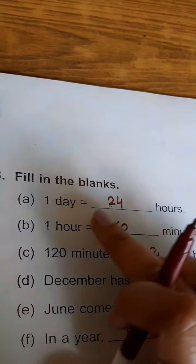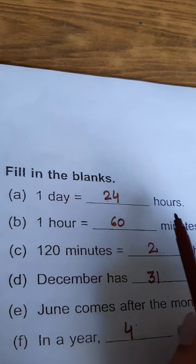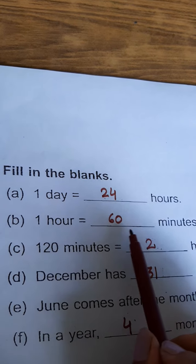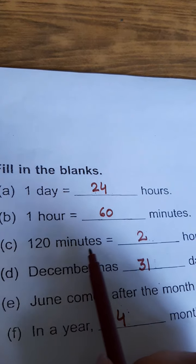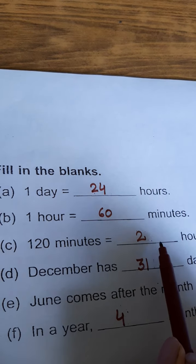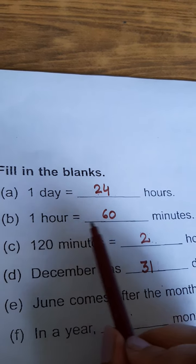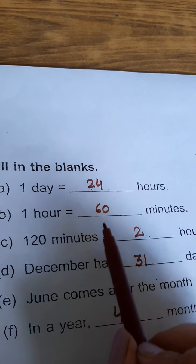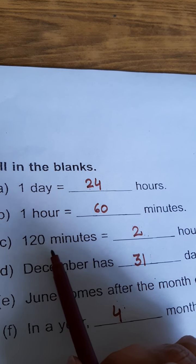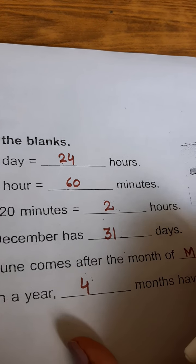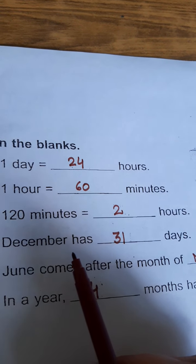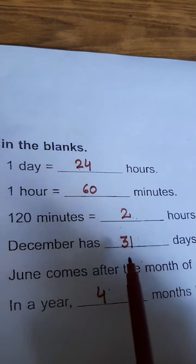One day equals 24 hours. One hour equals 60 minutes, so we will write 60 here. Part C: 120 minutes equals how many hours? Because we know that one hour equals 60 minutes, 60 plus 60 equals 120, so we will write 2 hours here.